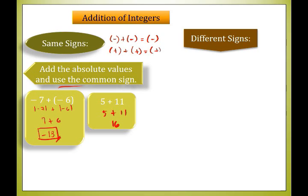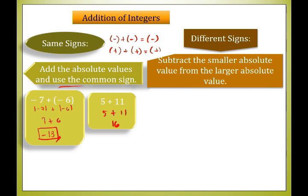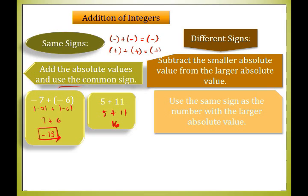Now, what if we have integers with different signs? They have different rules for addition. If we have different-signed integers, subtract the smaller absolute value from the larger absolute value. Then use the same sign as the number with the larger absolute value — that will be the basis of our sign.